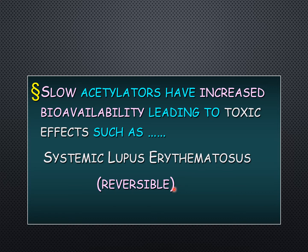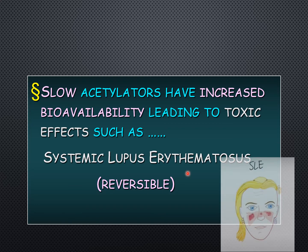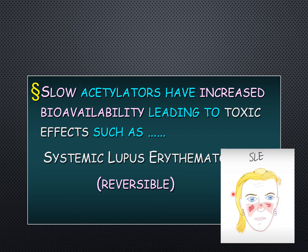SLE — systemic lupus erythematosus — is an autoimmune disorder that affects multiple organs and presents with a characteristic butterfly rash on the cheek areas. There is also drug-induced lupus, which is reversible: once the drug is stopped, the effect is reversed. This is the presentation of systemic lupus erythematosus.